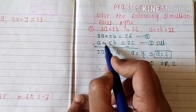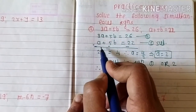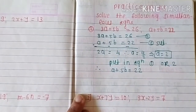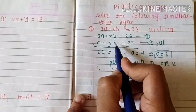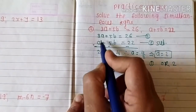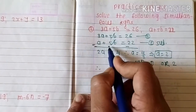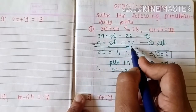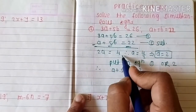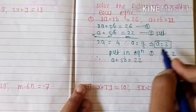If the coefficient is not the same, multiply one or both equations by some constant to make them equal, then take addition or subtraction. Here the coefficient of b is the same, so directly take subtraction. The 5b and 5b cancel, leaving 2a equals 26 minus 22, that is 4, so a equals 4 divided by 2, giving a equals 2.